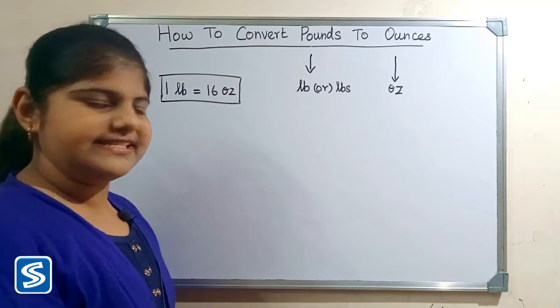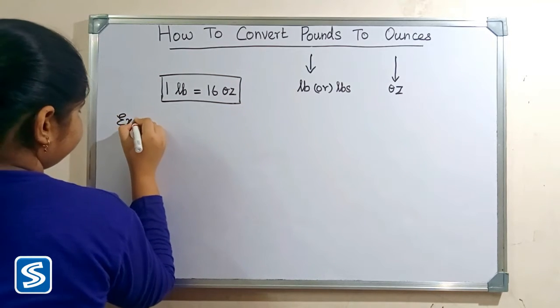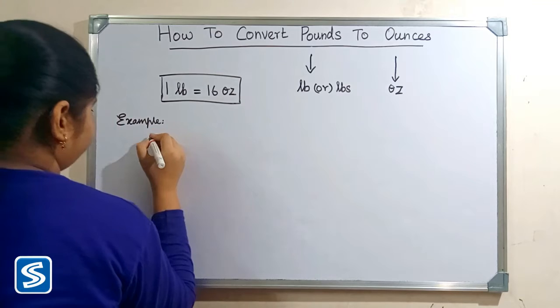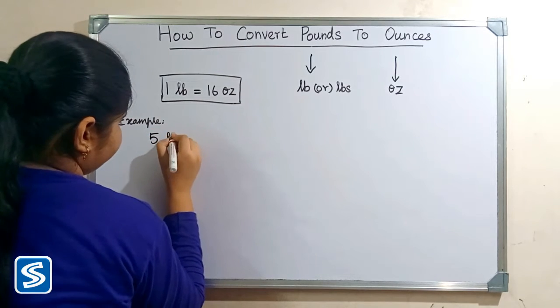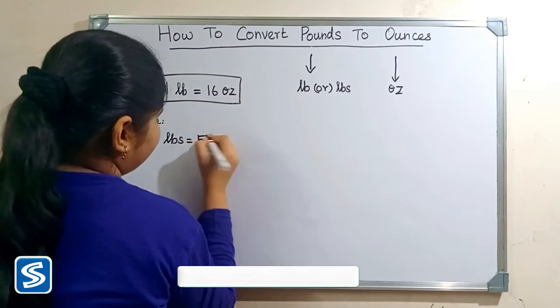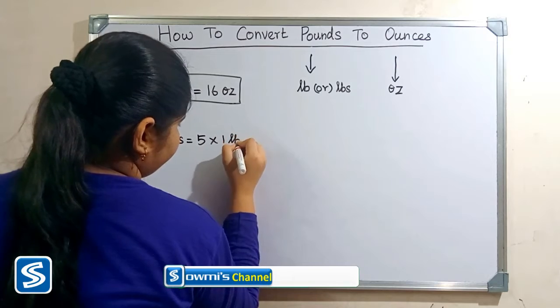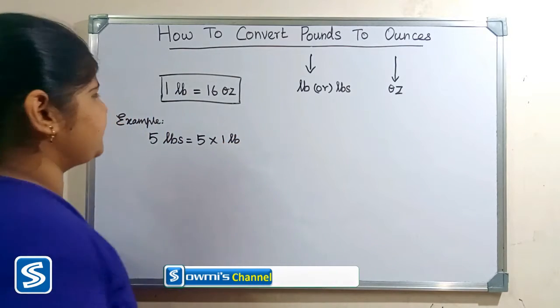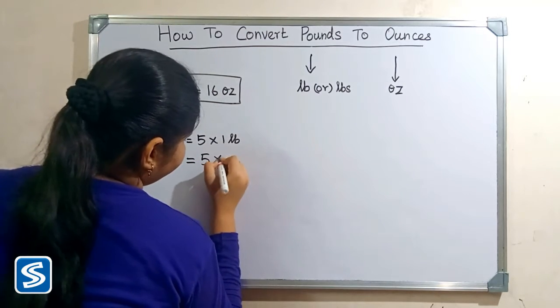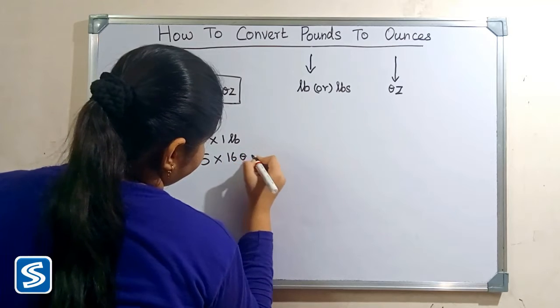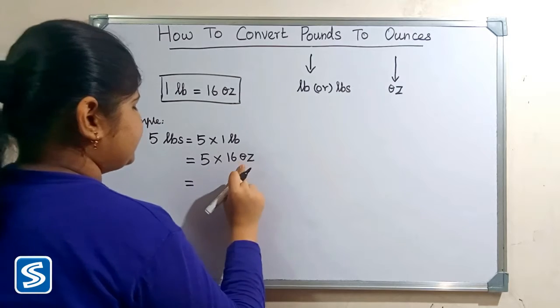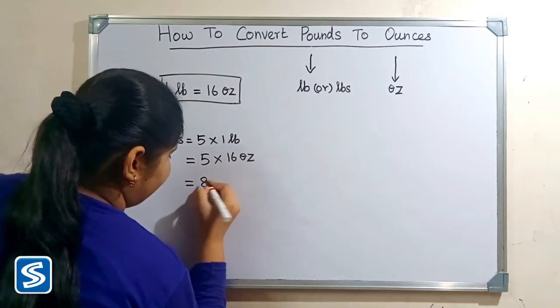Now we will take some examples. For example, we can take 5 pounds. 5 pounds can be written as 5 multiply 1 pound. Now we have to substitute 16 ounces in the place of 1 pound, so 5 multiply 16 ounces.